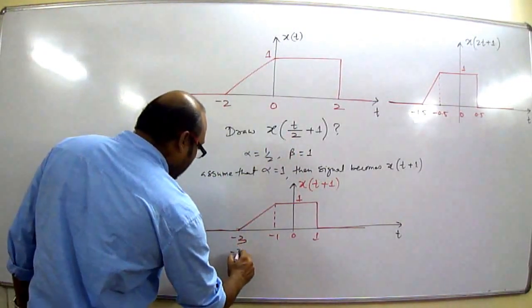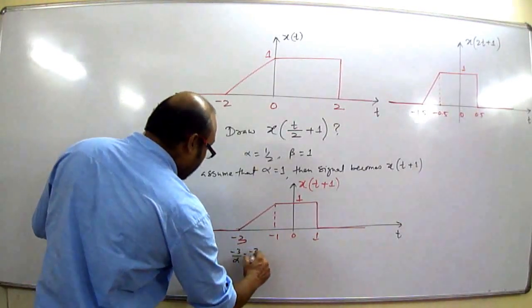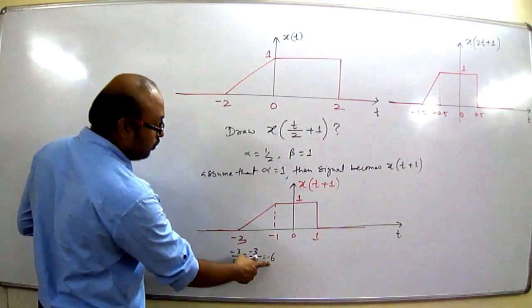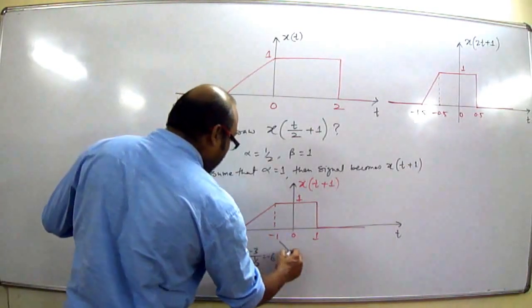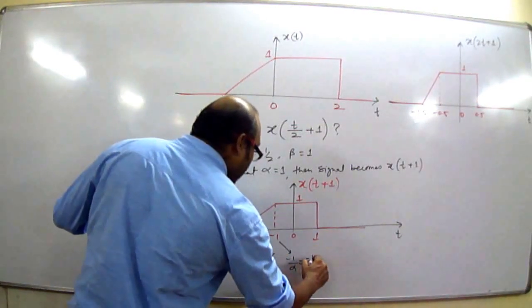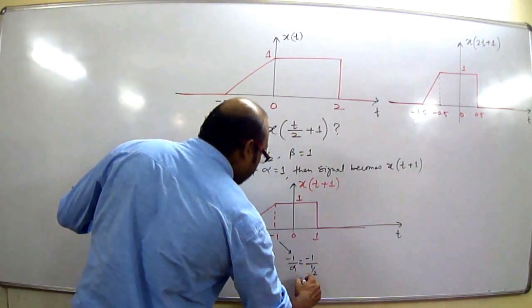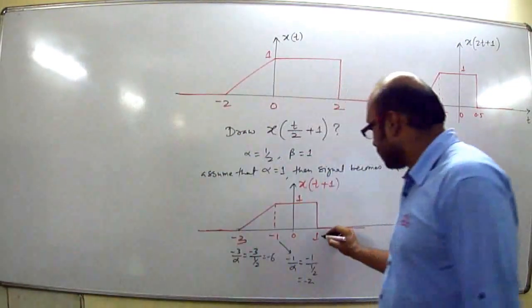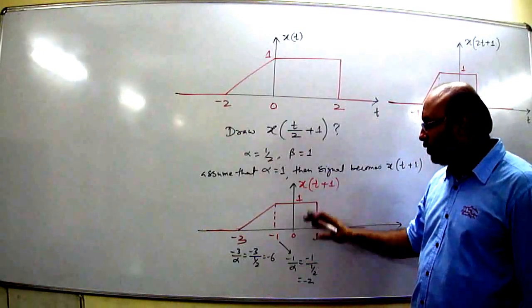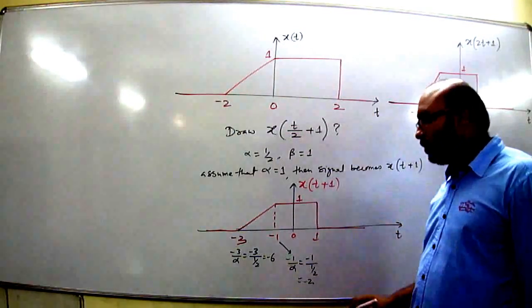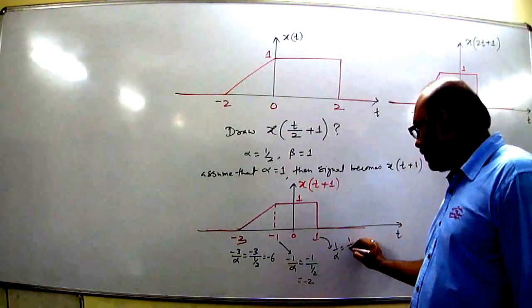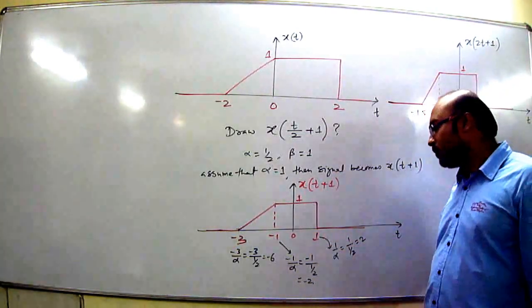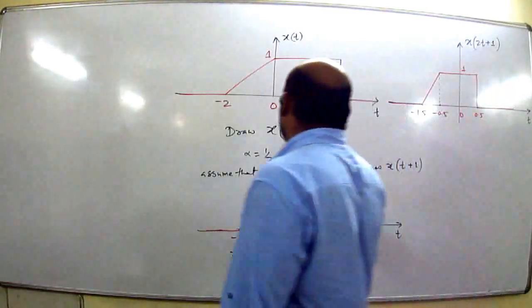If we divide −3 by α (which is 1/2), then it becomes −3 ÷ (1/2) = −6. The value of the signal at t = −3 will now move to −6. Minus 1 divided by 1/2 gives −2, so the value at t = −1 moves to −2. The value at t = 0 remains at 0. 1 divided by 1/2 gives 2, so the value at t = 1 moves to t = 2. We can now draw x(t/2 + 1).